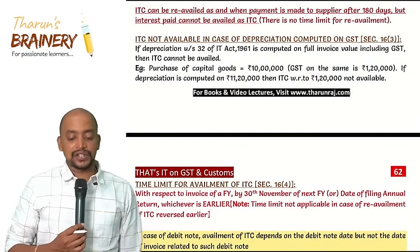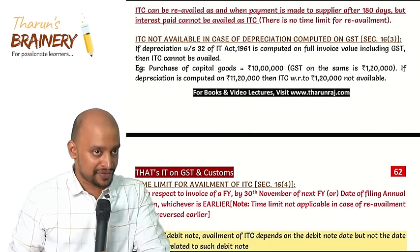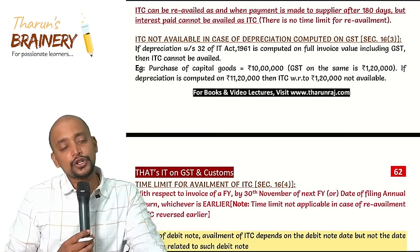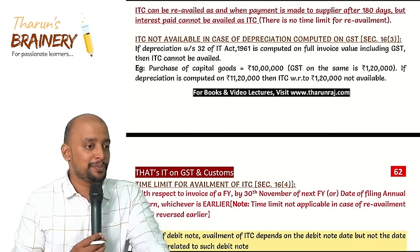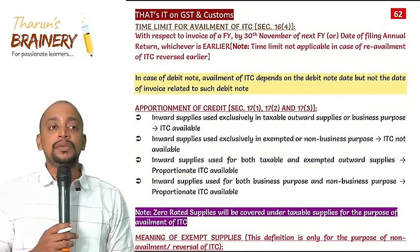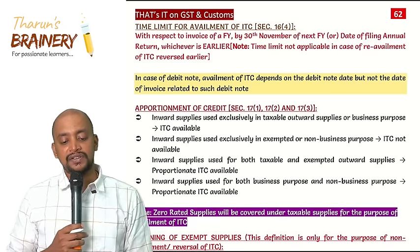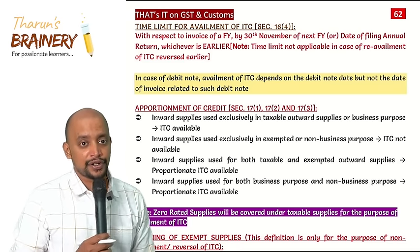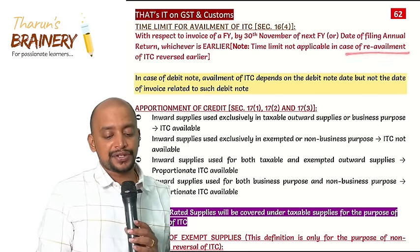Section 16 subsection 3 - Depreciation: if under Income Tax, while computing depreciation under section 32, the GST amount is included in the block of assets, then ITC cannot be taken on that GST amount. For example, if the asset is 10 lakhs and GST is 1.2 lakhs, only 10 lakhs should be added to the block. If 11.2 lakhs is added to the block, the 1.2 lakhs cannot be taken as ITC.